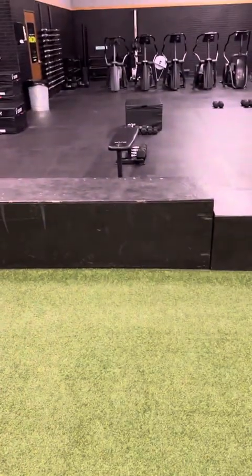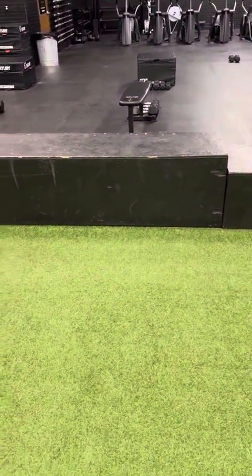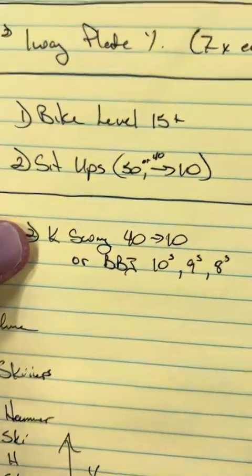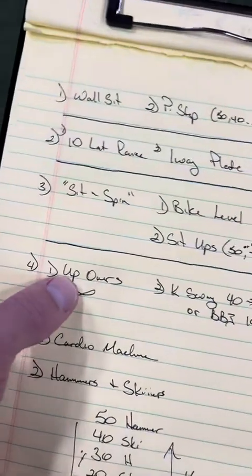And I will swing 50 while my partner rocks up and overs. And then we'll switch and then do 40s, 30s, 20s, and 10s. Or you can hit the up and overs the same.